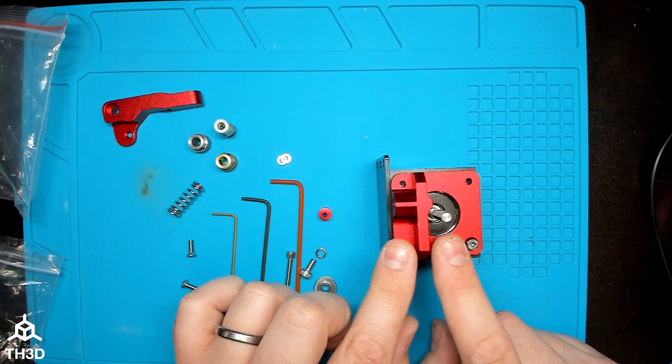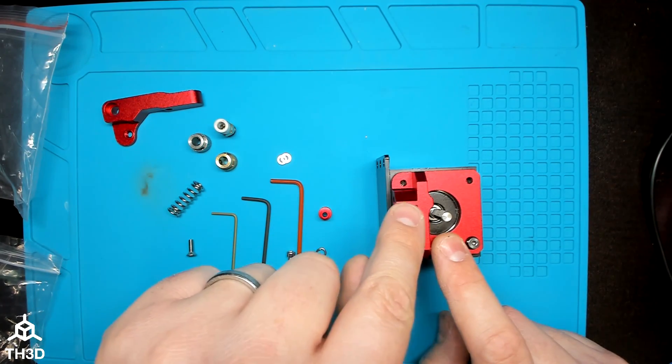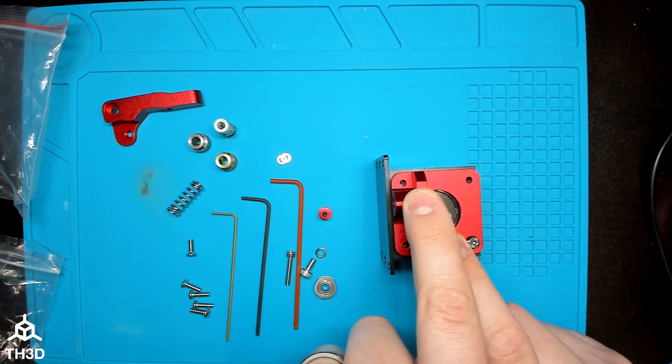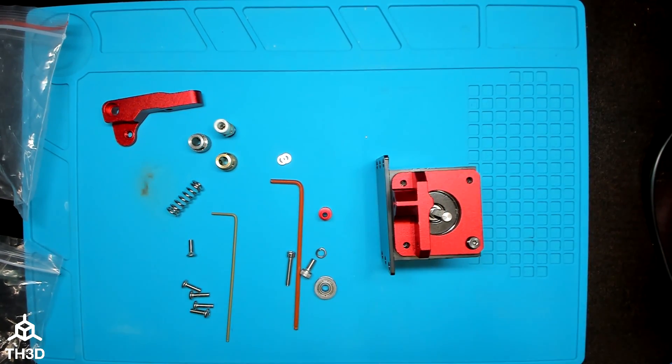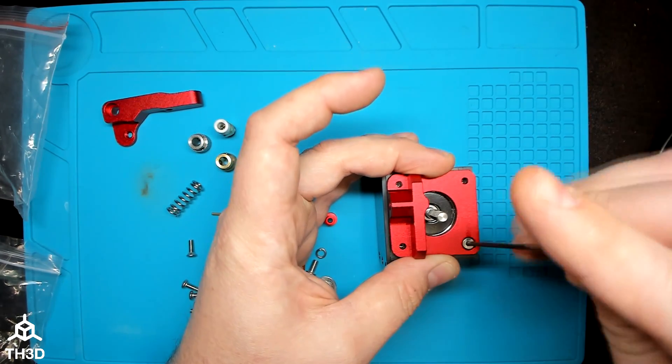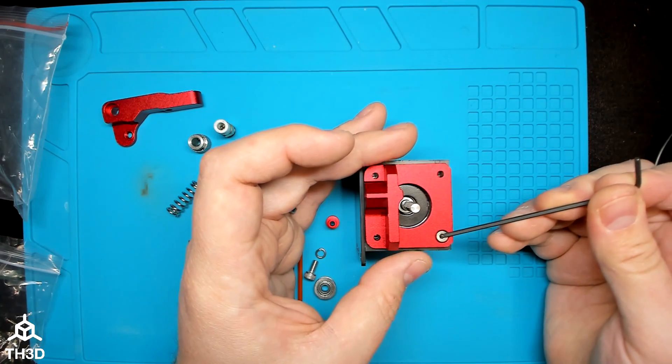When you're assembling this extruder on a printer, remember to take into consideration that the filament is going to exit right here. You want to think about that when you're putting this on your printer because you want your bottom tube to exit a certain direction. So now that we have this in place, go ahead and tighten down the short M3 screw. This one uses the two millimeter socket.